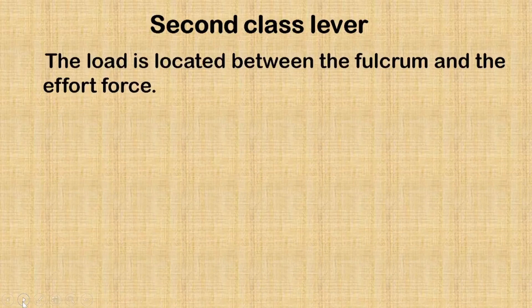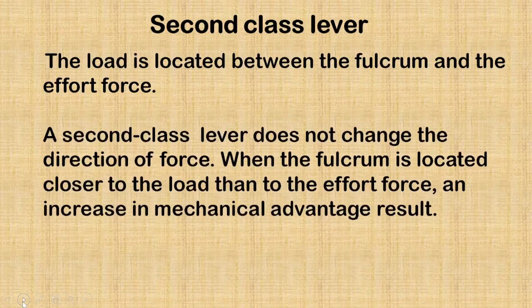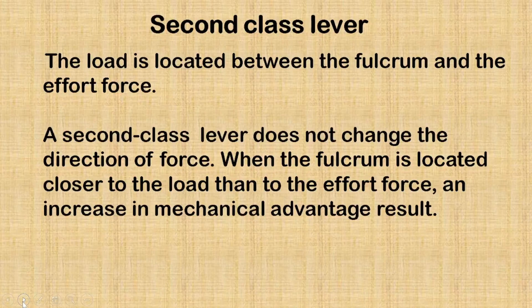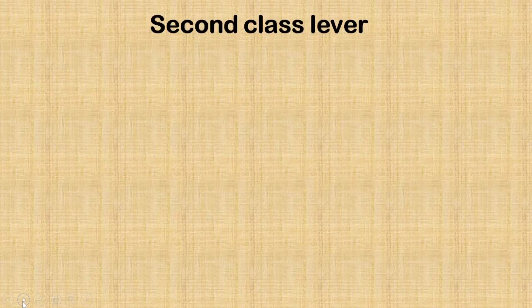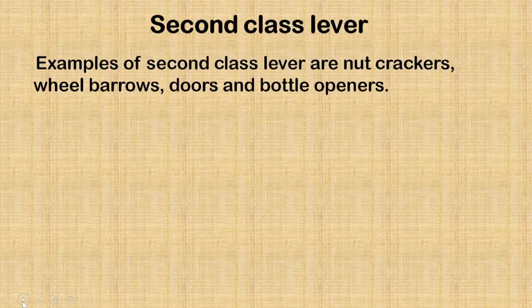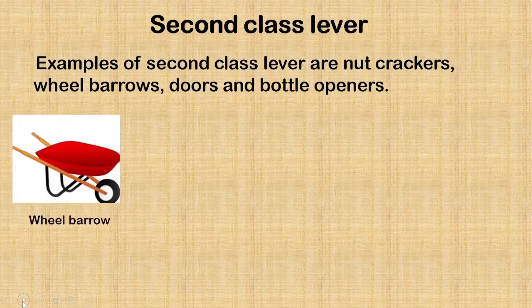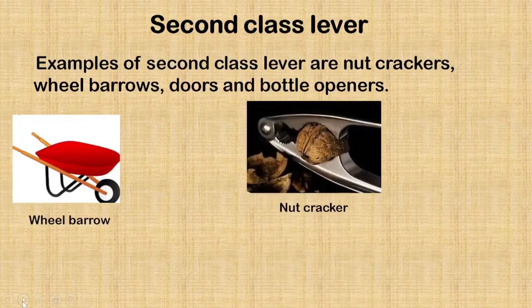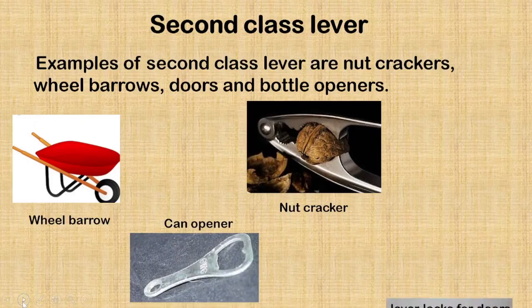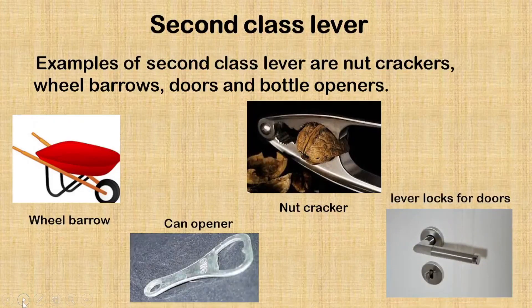Number two is the second-class lever. The load is located between the fulcrum and the effort force. A second-class lever does not change the direction of force. When the fulcrum is located closer to the load than to the effort force, an increase in mechanical advantage results. Examples of second-class levers are nutcrackers, wheelbarrows, doors, and bottle openers. This is the wheelbarrow, the nutcracker, the can opener, and the lever locks for doors.